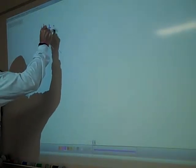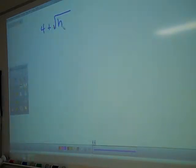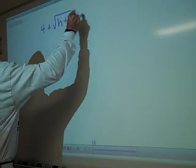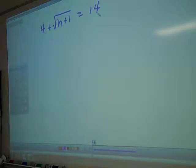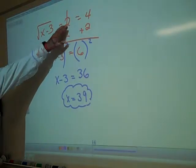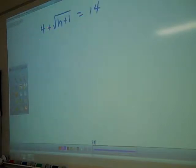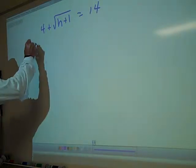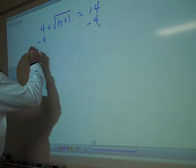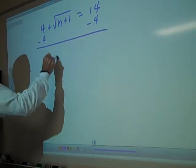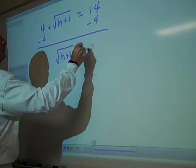4 plus the square root of h plus 1 equals 14. First step, Mr. Kendall. Subtract 1 from both sides. See, I tricked you. On this one, I put the number behind the radical. And on the next one, I tried to trick you. I put it in front. Subtract 4 from both sides. Very nice. Minus 4, minus 4. Draw a line. The square root of h plus 1 is equal to 10.